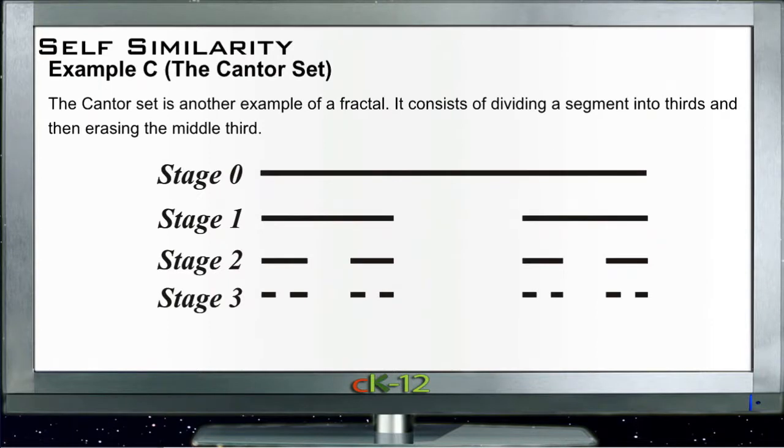And our third example here is a very simple fractal. It's called the Cantor set. And to draw the Cantor set, what you do is you just have a straight line, and then you divide that line into thirds. Yellow doesn't work, so I'll go with white. Divide that line into thirds, and then you erase the middle third.